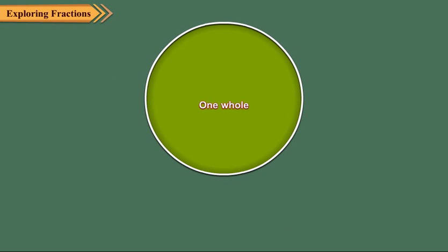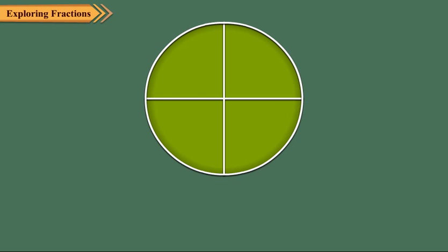Now, again draw a circle and divide it into four equal parts. Each part is one-fourth, that is, one upon four. We see here that four-fourths make one whole.